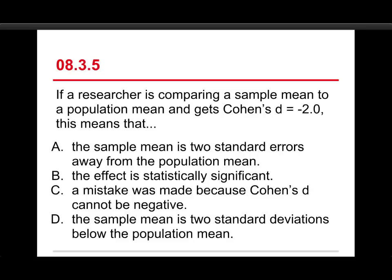Alright, the last question for Quiz 3. If a researcher is comparing a sample mean to a population mean and gets Cohen's D of negative 2.0, this means that: A, the sample mean is 2 standard errors away from the population mean, B, the effect is statistically significant, C, a mistake was made because Cohen's D cannot be negative, or D, the sample mean is 2 standard deviations below the population mean.